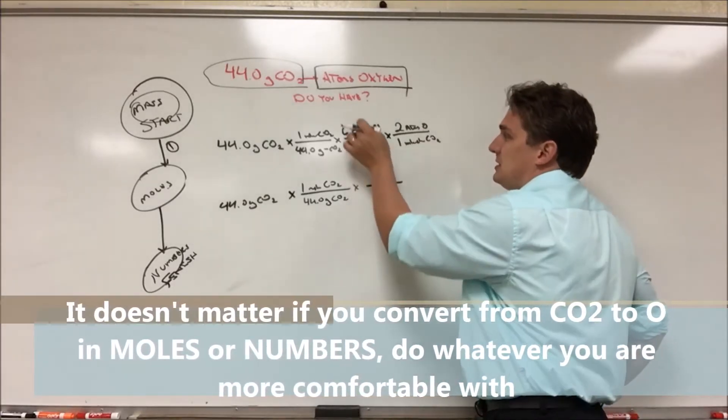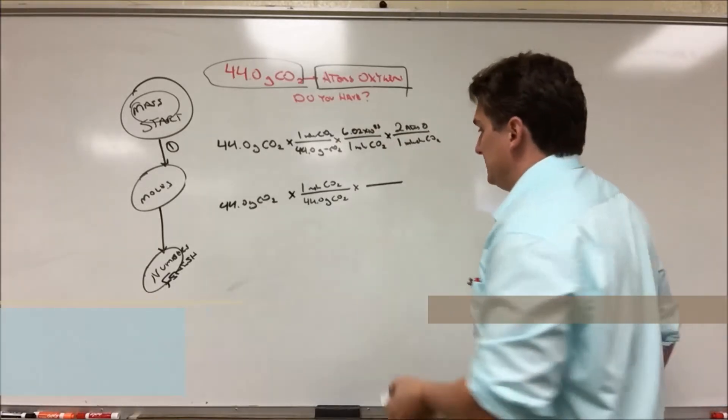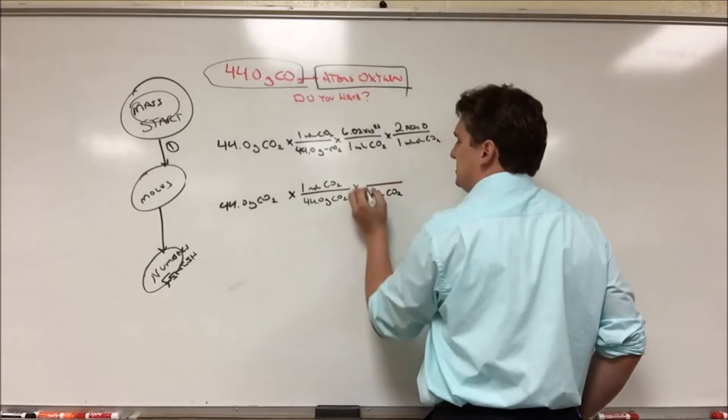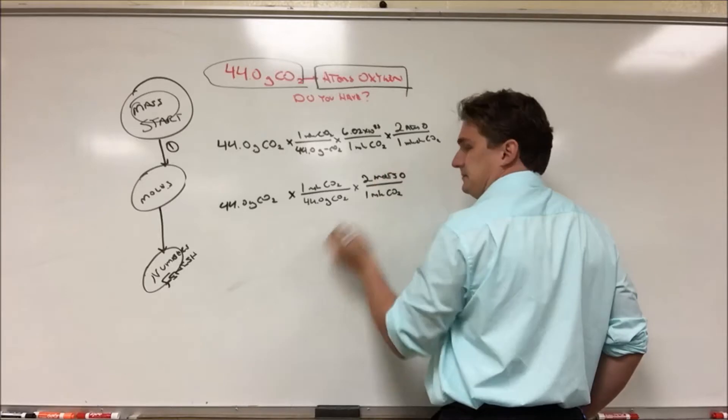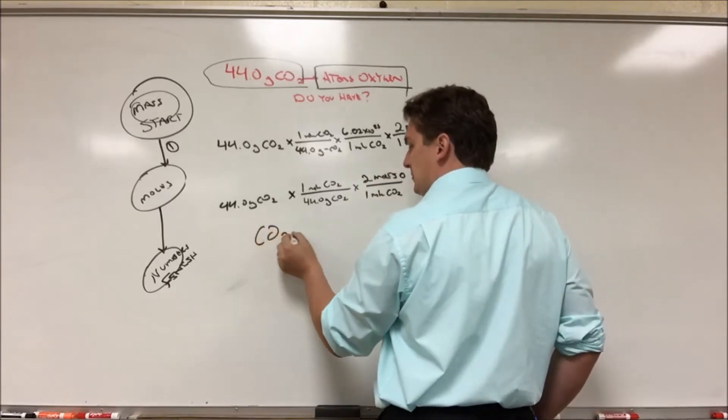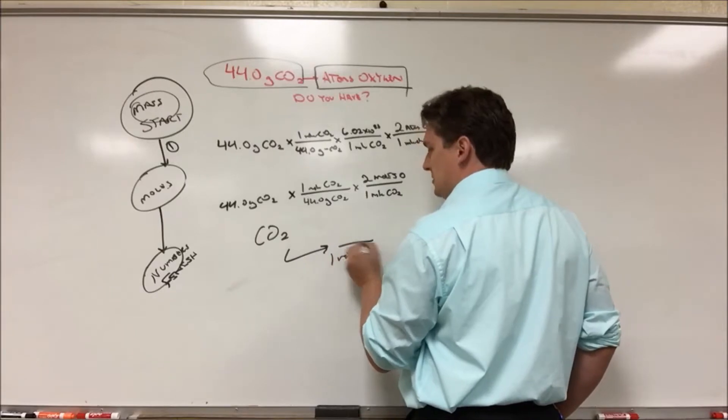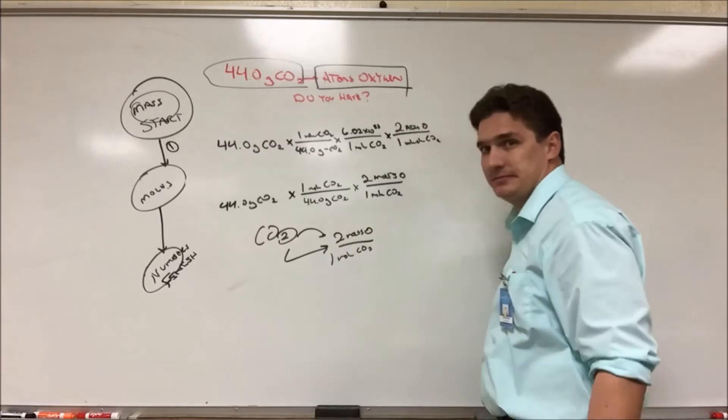Now instead of using this mole of CO2 to molecule CO2, what we can do is we can use a mole ratio which comes from the chemical formula. So for every mole of CO2, we have two moles of oxygen, and this comes from the chemical formula. For every mole of our compound, mole of CO2, we've got two moles of oxygen.